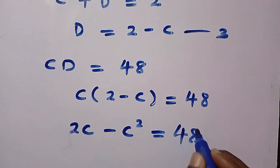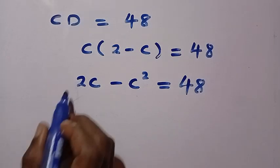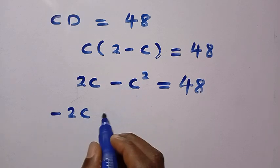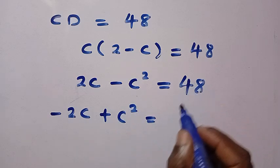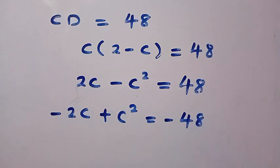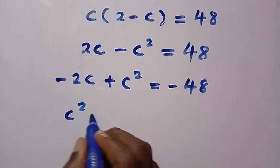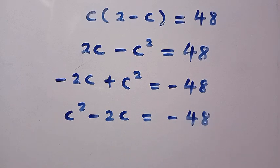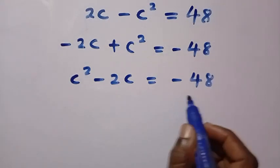Let's multiply by negative. Multiplying by negative we have minus 2C, this multiplied by negative we have plus C squared, and this by negative we have minus 48. Then by rearranging we have C squared minus 2C equals minus 48. Here we have a quadratic equation.